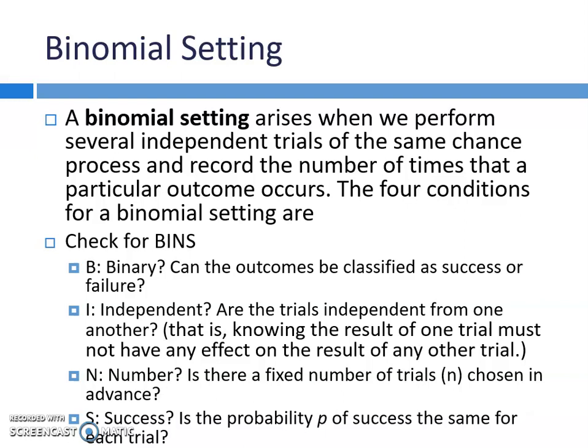I: Is it independent? Are the trials independent from one another? Meaning, knowing the result of one trial doesn't have any effect on the result of another trial. N stands for number — in a binomial setting, there should be a fixed number of trials chosen in advance. And then lastly, S stands for success, which has to do with the probability of success. Is the probability of success the same for each trial?